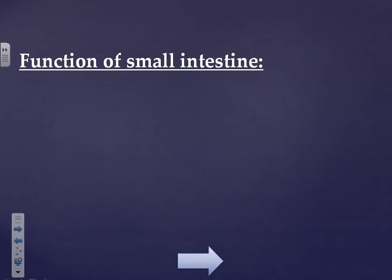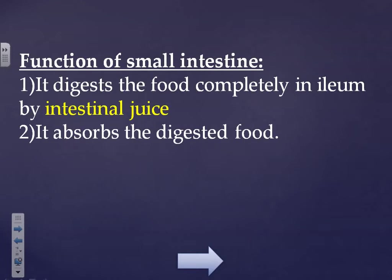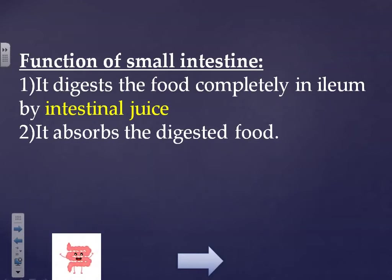The small intestine has two main functions. First, it completely digests the food in the ileum using intestinal juice. Second, it absorbs the digested food and passes it into the blood. The digested food passes into the blood through small nipples called villi, which are found in the walls of the small intestine.